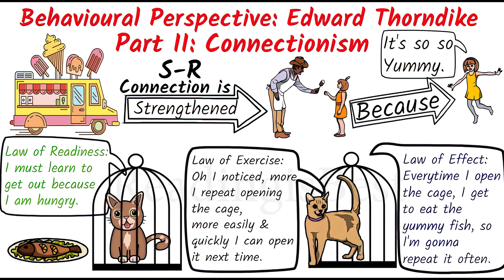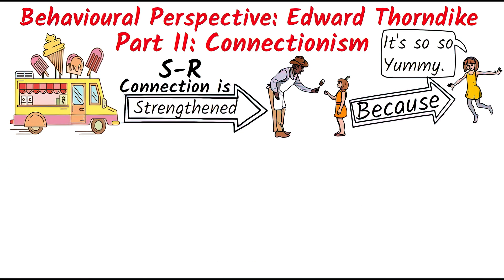Based on his experiment, Thorndike believed organisms make a connection between stimulus and response, and such connection is strengthened if the response is rewarded, whereas such connection is weakened when the response is unrewarded. This is his basic idea of connectionism.